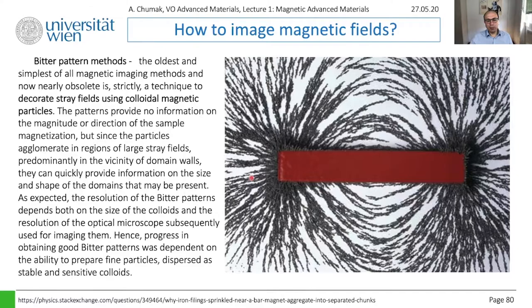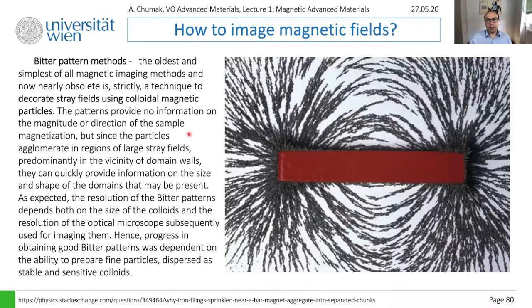This method also went into real technology. It is named the Bitter Pattern. It's an old method, almost dead nowadays, practically not used, and is replaced by more advanced optical methods. But principally, if you have colloidal magnetic nanoparticles — not such large ones, but micron or submillimeter — you can go to the nanoscale, and then you can get a pretty good picture of magnetic fields or magnetization if you want to see domains.